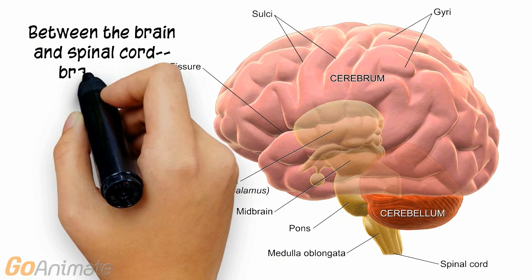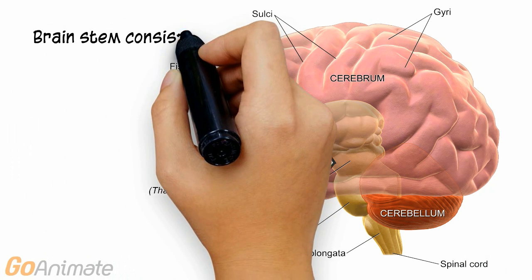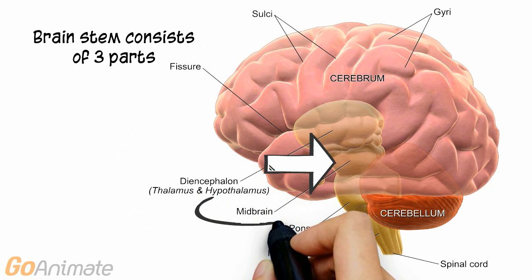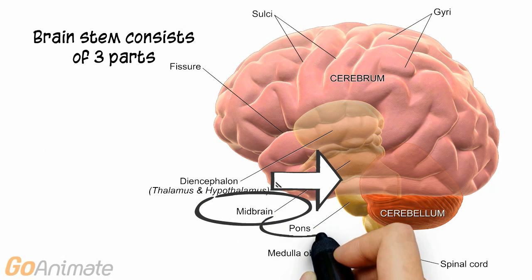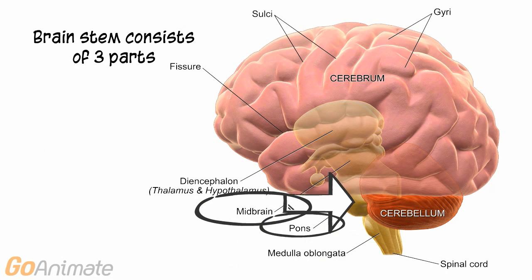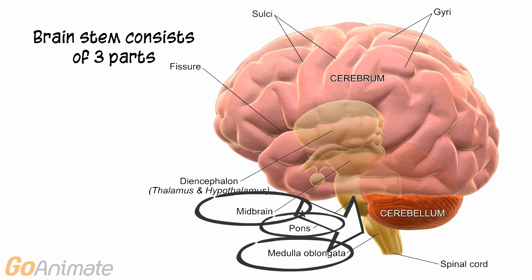Just below the diencephalon is the brain stem, which consists of three parts. The superior portion is called the midbrain. Just below the midbrain is the pons, and below the pons is the medulla oblongata.